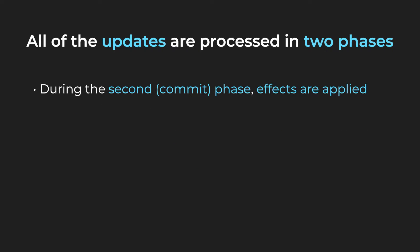After the first phase finishes, effects are applied. This process is called the second phase, also known as the commit phase, and because it results in changes visible to the user, this phase is always synchronous. Most lifecycle methods are actually called in the first phase — we will get to this later.